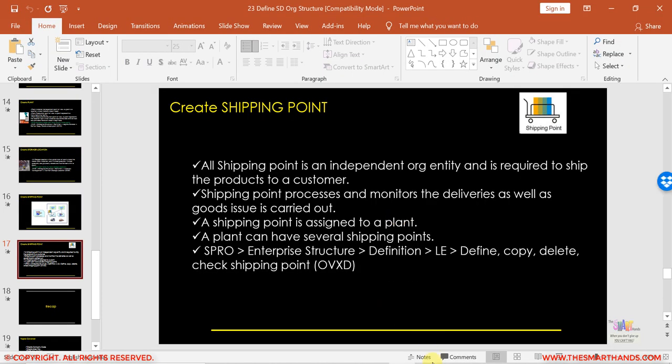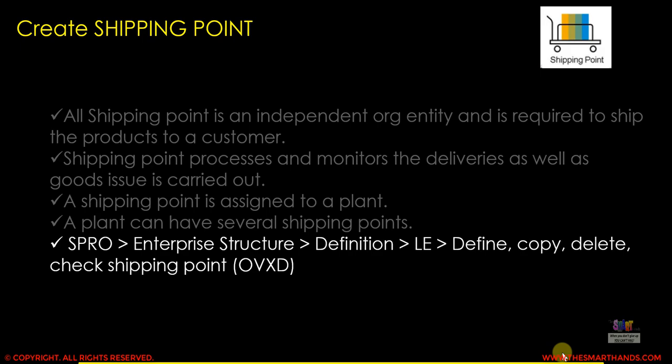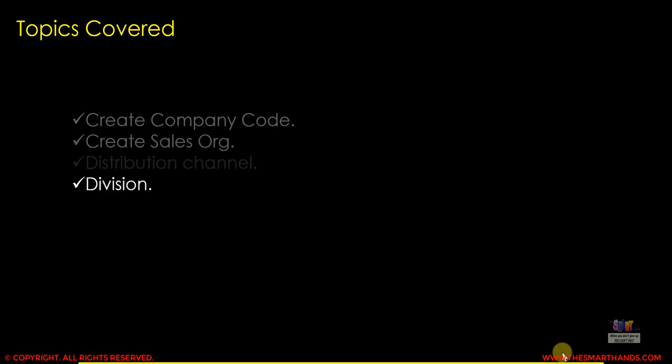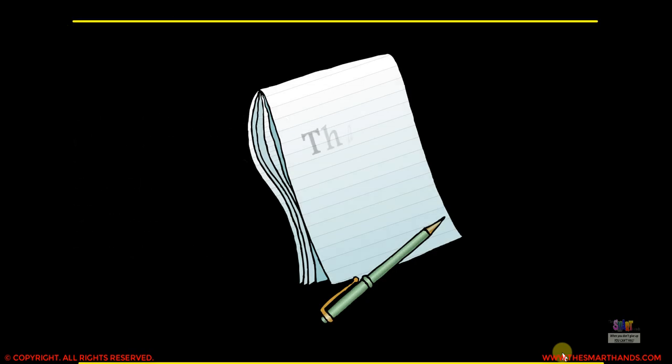We have now defined all the main SD org structure elements. To recap what we've learned in this video: we've learned how to create our own company code, sales organization, distribution channel, division, plant, shipping point, and store location. In the next video we'll see how we can assign them to each other. Thank you very much for watching.